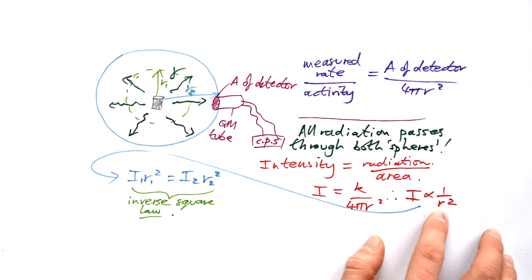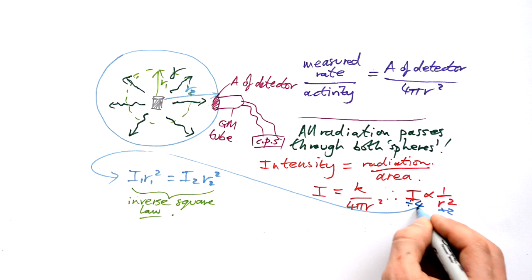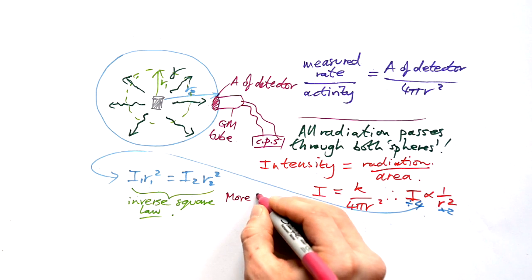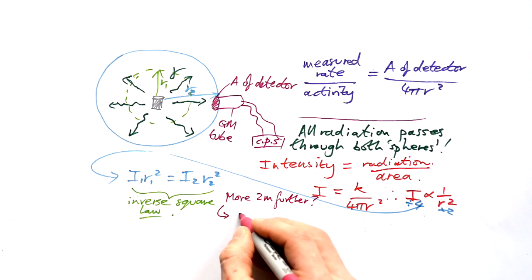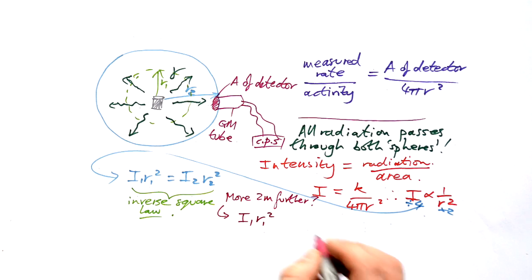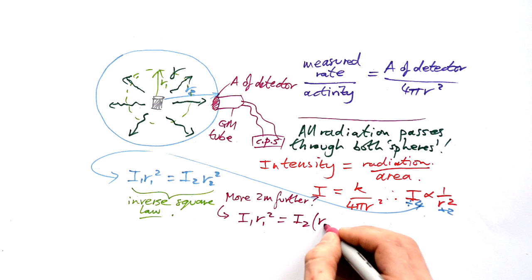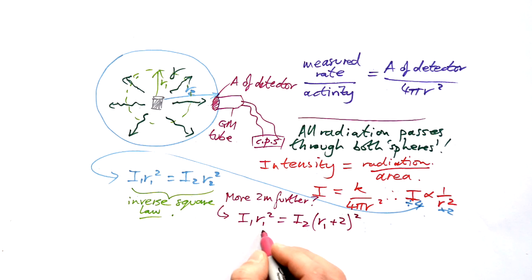So obviously if we move our detector twice as far away, what happens to the intensity? Because it's inversely proportional to the square, it's going to be halved and halved again — intensity goes down by a factor of four. Move it three times away and intensity goes down by a factor of nine. Taking r² to the other side, we can say that intensity times distance squared for one distance equals intensity times distance squared for another distance. So I₁r₁² equals I₂(r₁ + 2)², and all you have to do is rearrange for r₁.